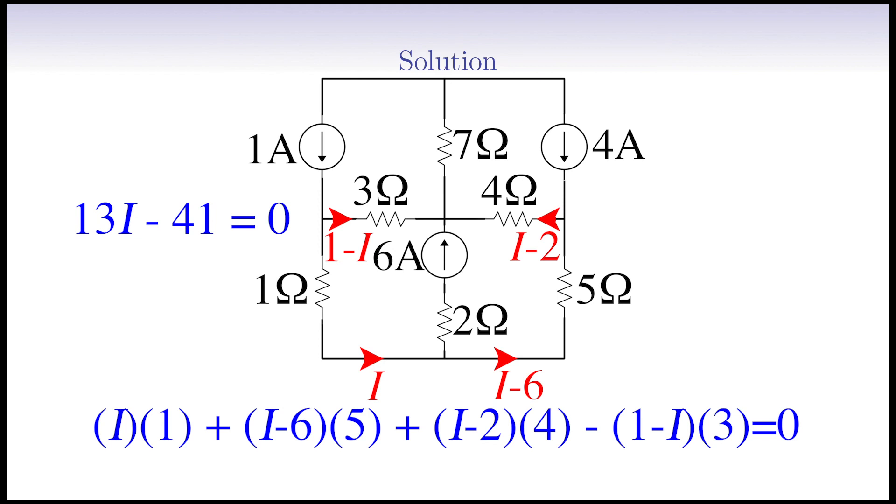Perfect! We add 41 to both sides of the equation to get 13 I equals 41. Finally, dividing both sides by 13, we end up with I equals 41 over 13.